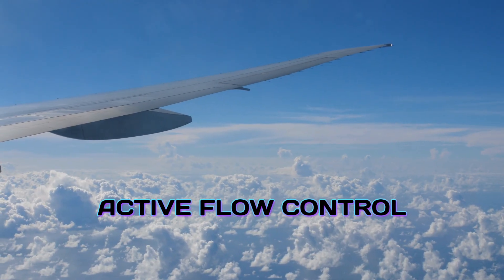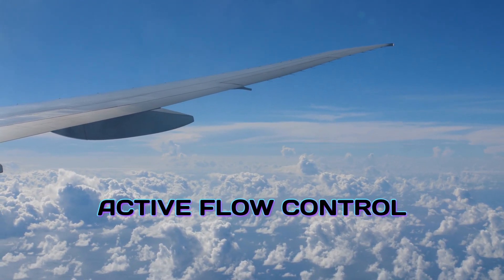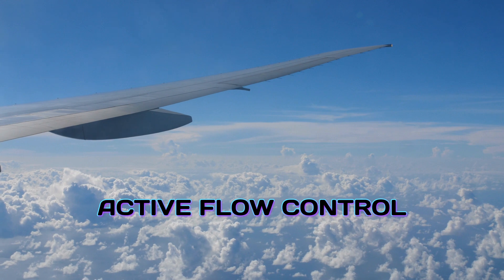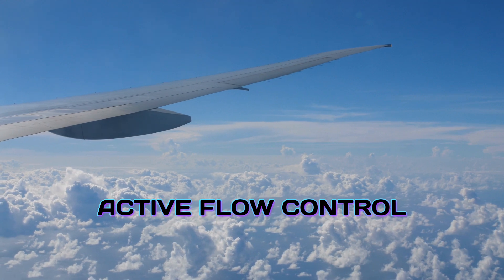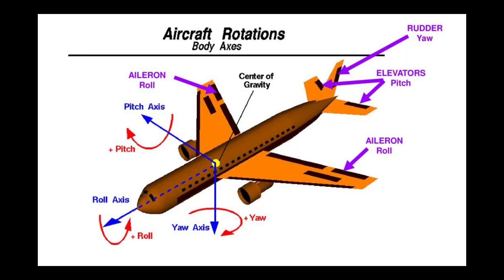Active flow control uses a variety of methods such as jets of air or even electric discharges to shape or sculpt the flow of air over an aircraft. It can alter the roll, pitch, and yaw without needing conventional control surfaces like flaps, rudders, and ailerons.